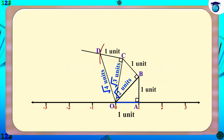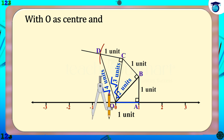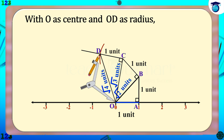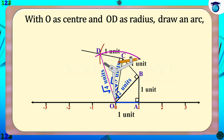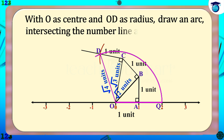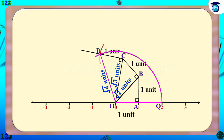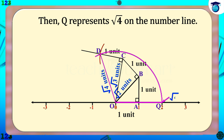Now root 4 is on the hypotenuse of right triangle OCD and we have to bring it onto the number line. For that, with O as center and OD as radius, draw an arc intersecting the number line at Q. Then Q represents root 4 on the number line.